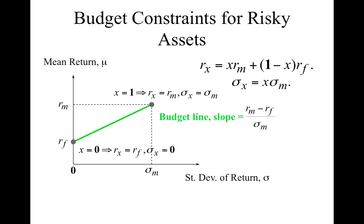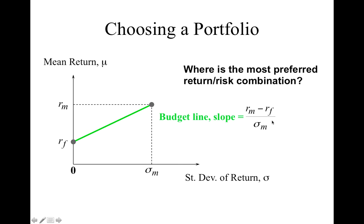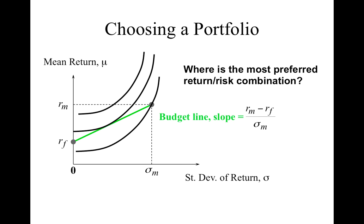Now we have preferences and the budget line, which we put together to find the optimally chosen combination. Notice that the slope is also the price of risk relative to mean return — it tells you the additional compensation required if the standard deviation increases by one unit. The most preferred return-risk combination is where the highest indifference curve is tangent to the budget line. That point gives you the combination of how much you are putting in the risk-free asset and how much in the stock.